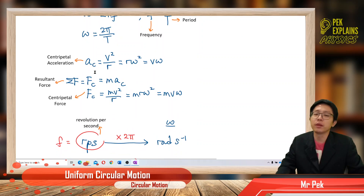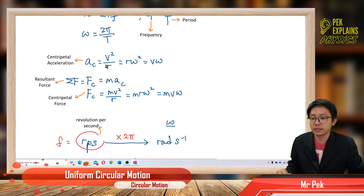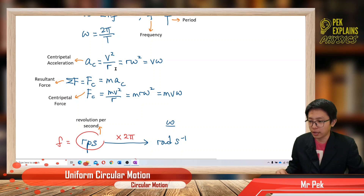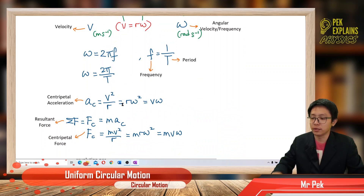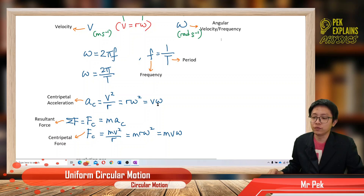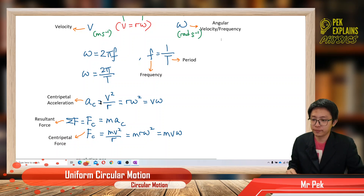Next, the formula for centripetal acceleration: ac = v²/r. When we substitute v = rω, we also get ac = rω². It can also be written as vω. So centripetal acceleration has three formulas: v²/r, rω², and vω.